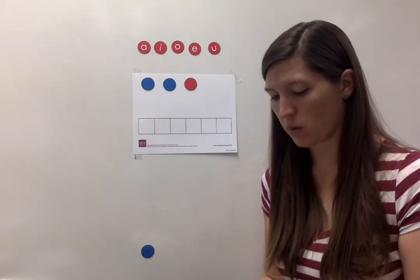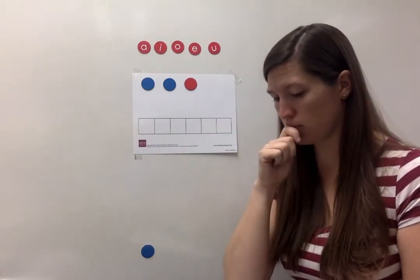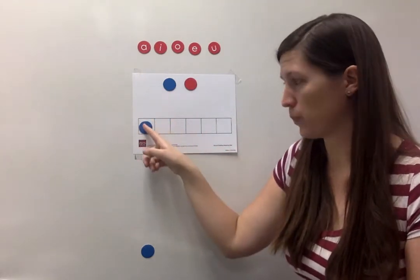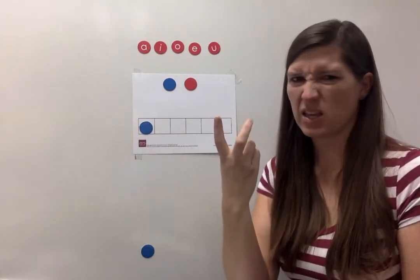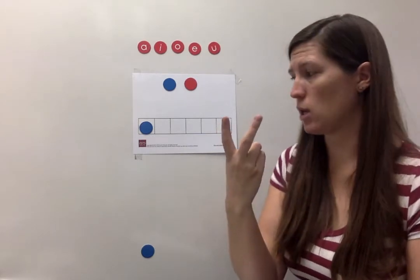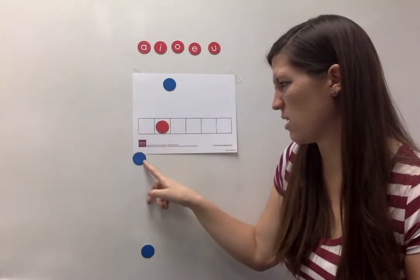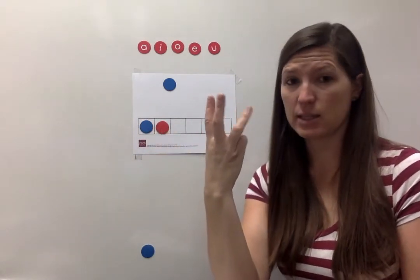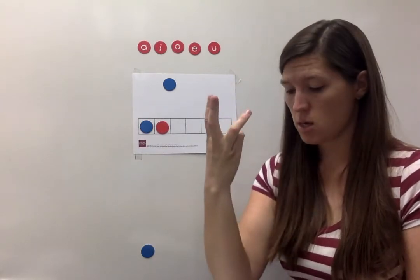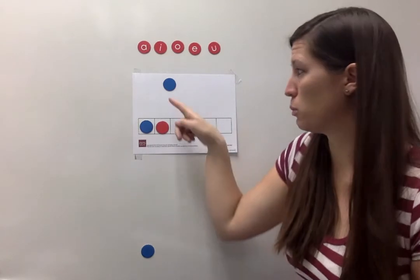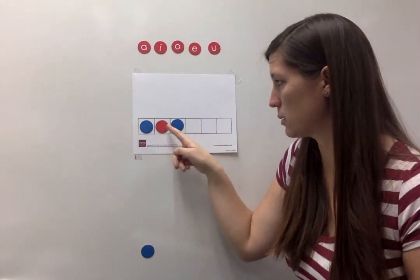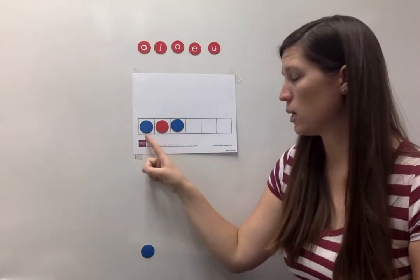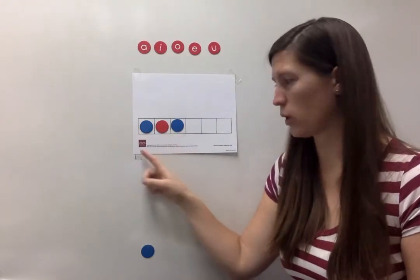Now help me with the chips. My first sound is /l/ — which colored chip do I need? Blue. My middle sound is /i/ — it's a short vowel sound, so what color chip do we need? Red for short I. The last sound is /d/ — which colored chip do I need? Blue for D. Touch the chips as we sound out and blend the word: l-i-d. What's the word? Lid.